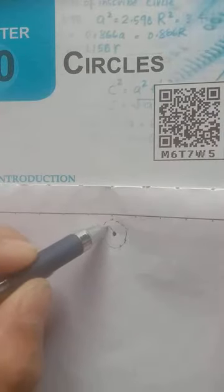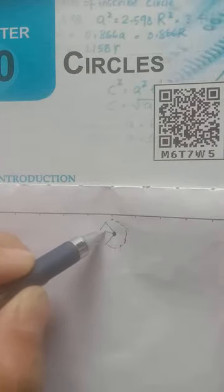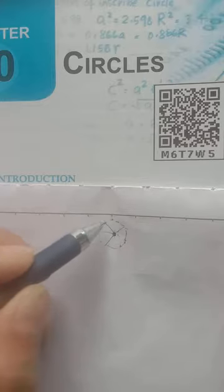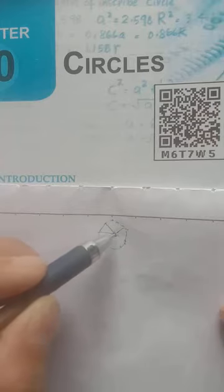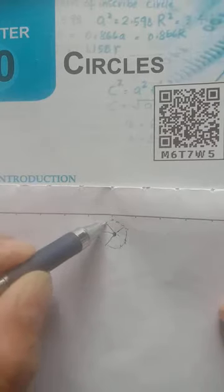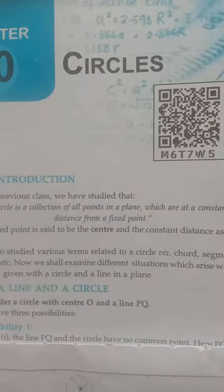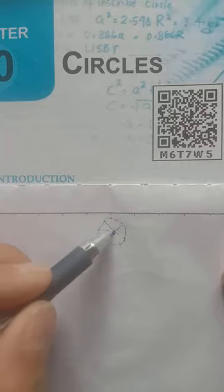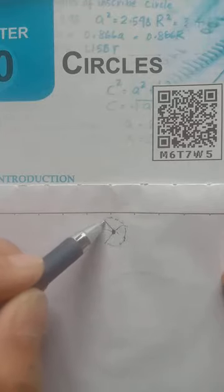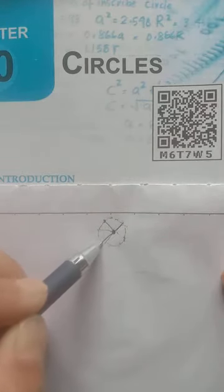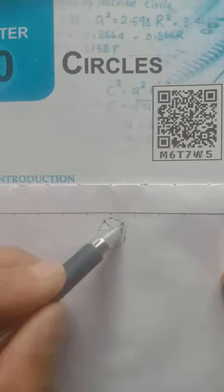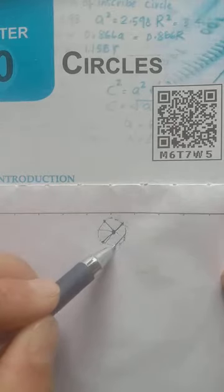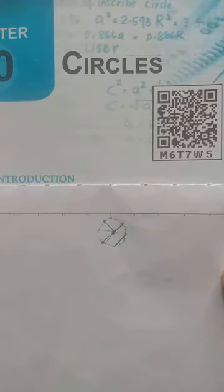If we join from the center to the boundary we get the line known as radius. All radii in the same circle are equal because they are the distance from the center to the boundary. If we join a line from the center to the boundary we call it a radius. If we join from the center to both sides of the boundary we call it a diameter. If we join any chord inside the circle we call it a chord.